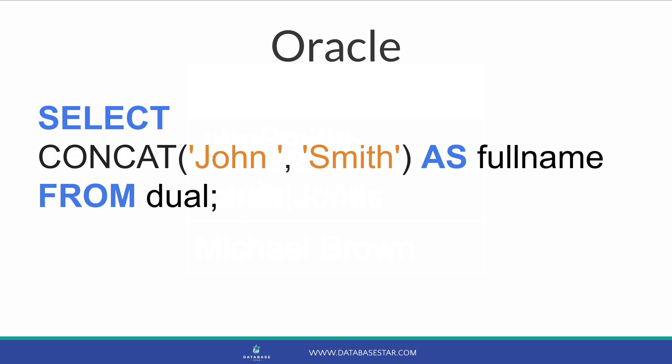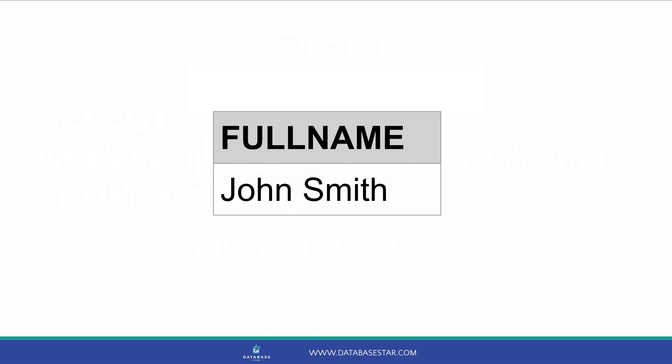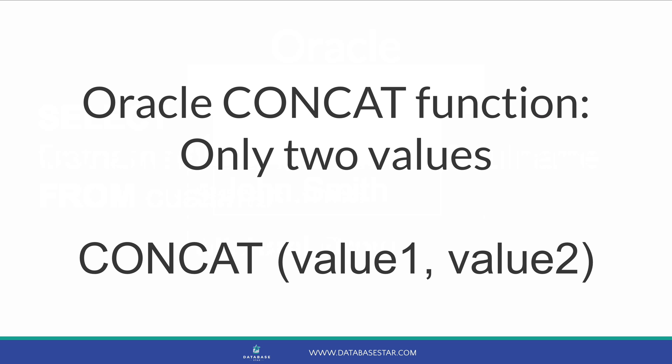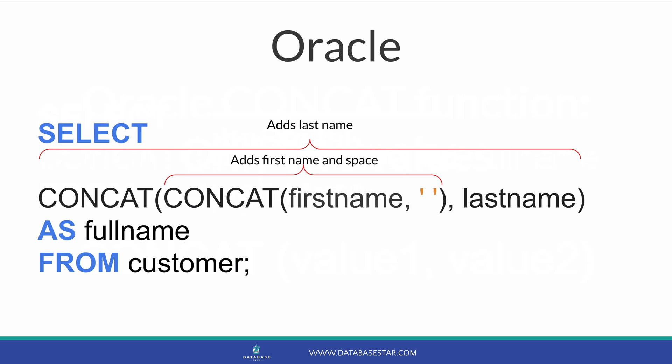The other way to concatenate values in Oracle is to use the CONCAT function. You supply two strings inside the CONCAT function and close the brackets. When you run this query, you see the first name and last name values. The main drawback of the CONCAT function is that you can only concatenate two values. If you want to concatenate more values, such as adding a space character or a middle name, you can do this by surrounding the CONCAT function with another CONCAT function. The inner CONCAT has the first name and a space, and the outer CONCAT combines that result with the last name.